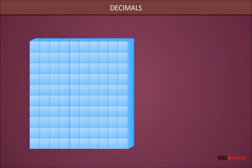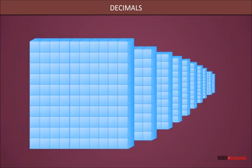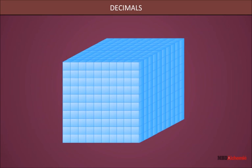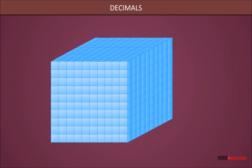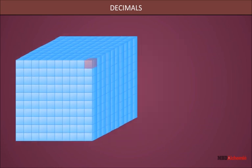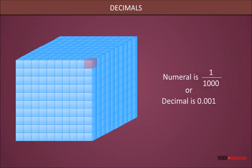Suppose we have 10 such boards of boxes. Joining these boxes together forms a cube. Therefore, the cube has 1000 boxes. Now, here we have colored 1 out of 1000 boxes. So, the colored part represents 1 thousandth. It has the numeral value 1 by 1000. The decimal form is 0.001.